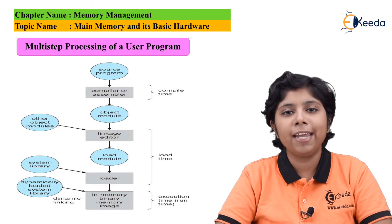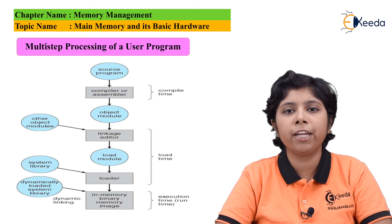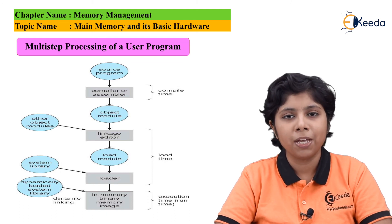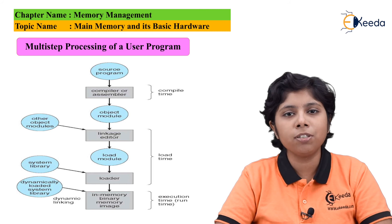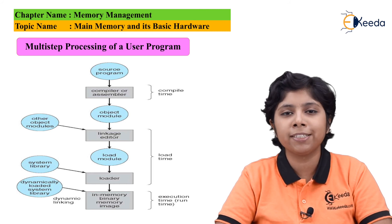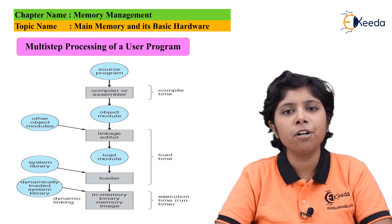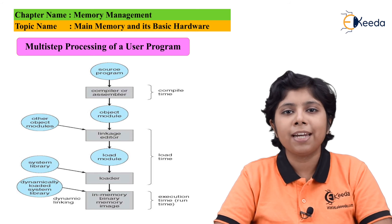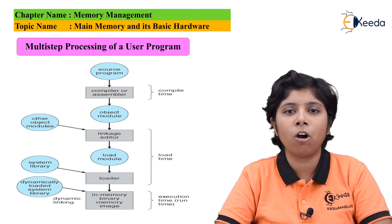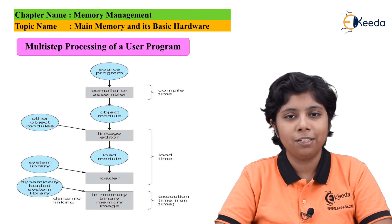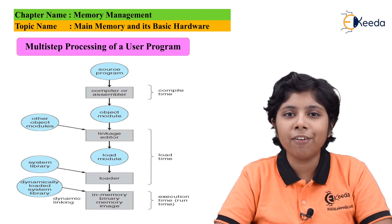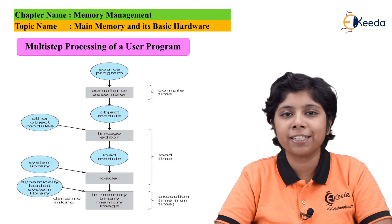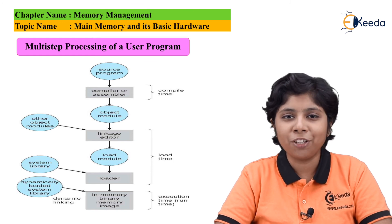For example, the operating system is the only one responsible for doing context switches. It must save the state of the current process before removing it from main memory and storing it to the backing store. It then reloads the memory of the next process from the backing store to main memory. This backing store addressing and context switching can only be done by the operating system. This is the basic hardware of the main memory.